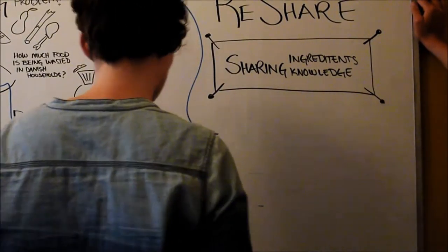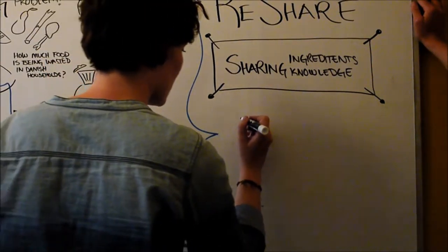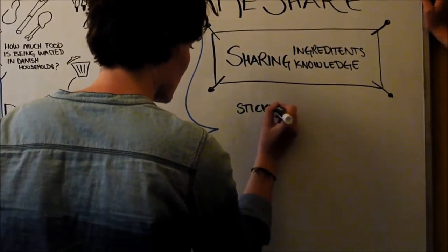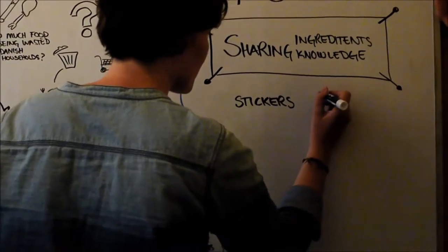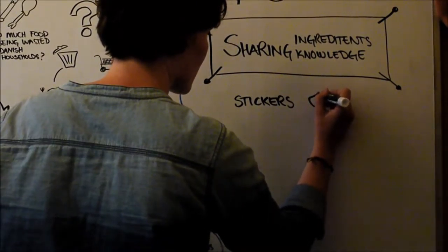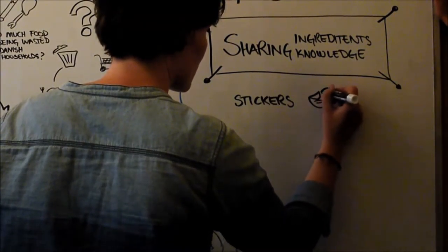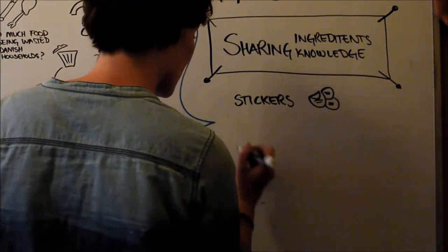The first element is food stickers that would facilitate students sharing food that would otherwise be thrown out. Basically they'll put stickers on food ingredients they won't get to use, that are almost in the red zone, or that they otherwise want to share. This will also provide students with an opportunity to test new ingredients.